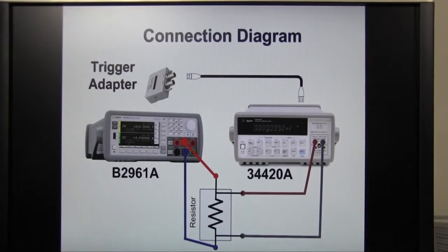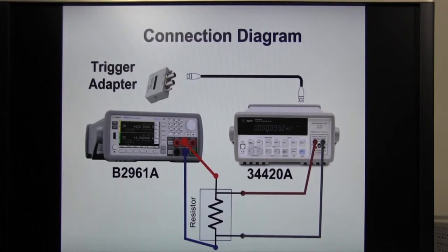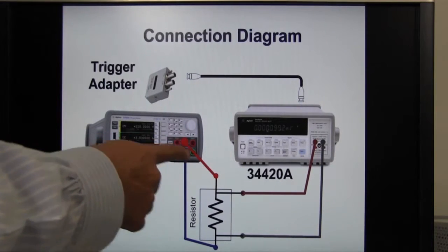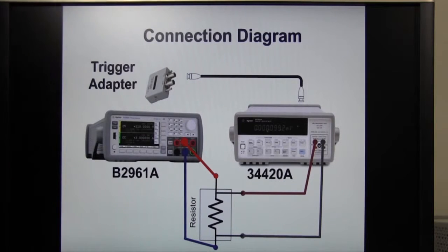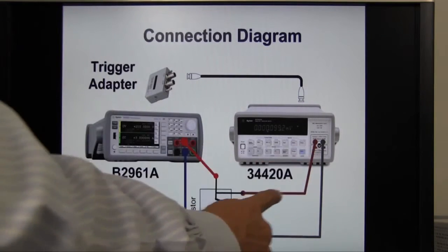This is the connection diagram. High force and low force terminal of B2961A is connected to the resistor. Terminals of 34420A are connected about the same way.